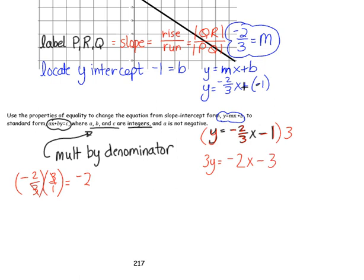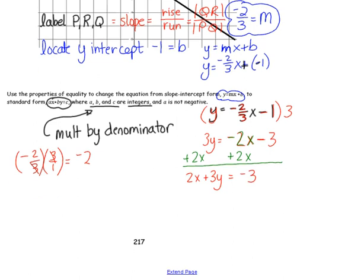So, we've got our integers. Next, we need to put it in the right form — ax plus by. In order to do that, I need to take care of the negative 2x. In order to move it to the other side, I'm going to add 2x to both sides of the equation. Now, I have 2x plus 3y equals negative 3. It is in the right order, and a is not negative. So, I have completed the problem. This is the standard form of the line.